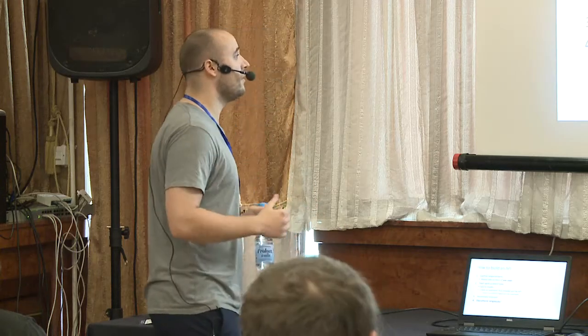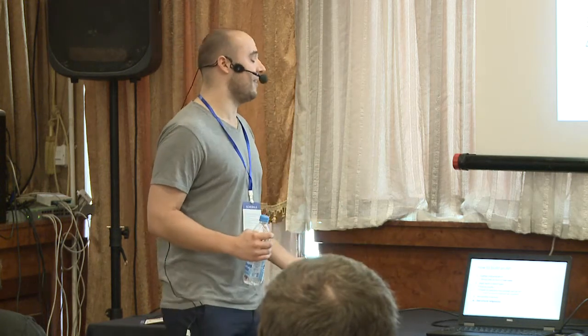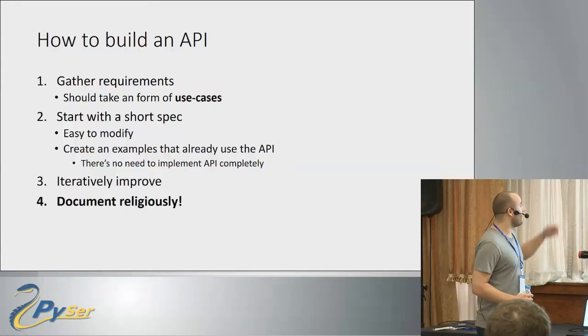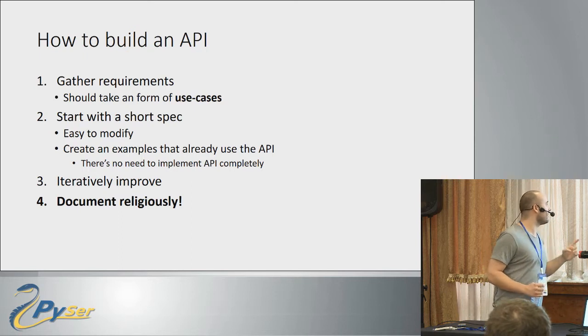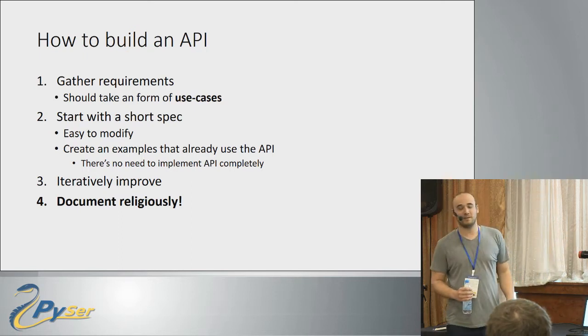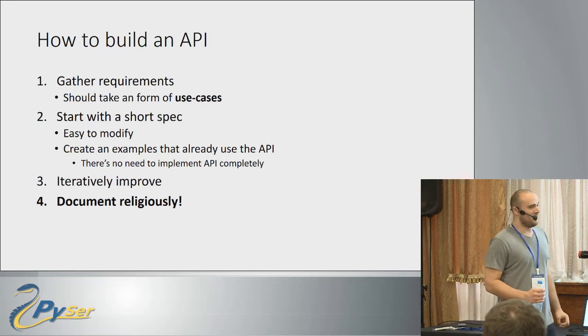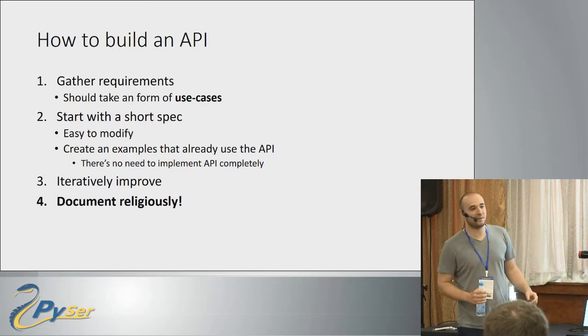Once you have this, you can iteratively improve. Gather the same group of people again and say: okay, we have this — does it help? They'll say no, and then you work together to find a solution. After you do that, the most important thing is to document your API religiously.